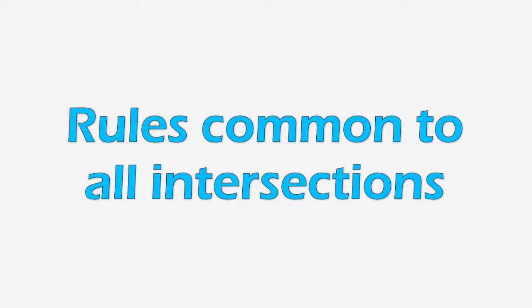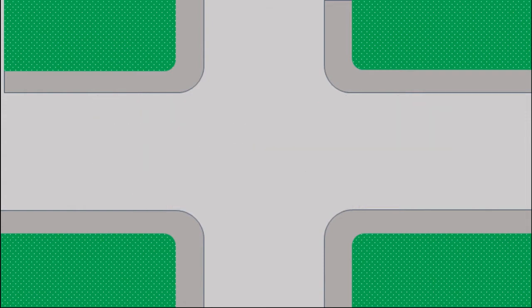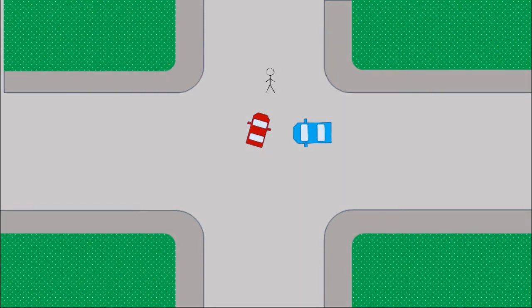While they are all different, there are certain rules that are applicable to all intersections. First and foremost, drivers must always yield to those that are already inside the intersection, meaning that there is no such thing as having the ultimate right of way. To illustrate this, let's look at a situation where a red car is turning left and must yield to a pedestrian already inside the crosswalk.